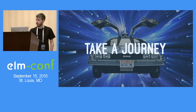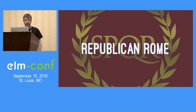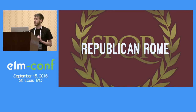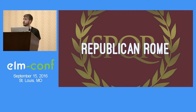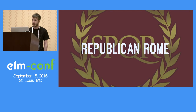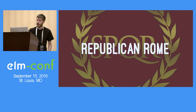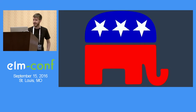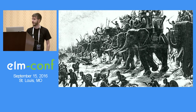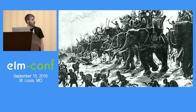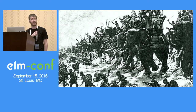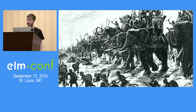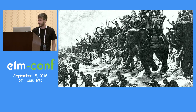We're going to be journeying to Republican Rome — the period before the Roman emperors started, approximately 2000 to 2500 years ago. These elephants are part of Hannibal's army facing down a Roman army commanded by Publius Scipio Africanus. We'll hear a little bit more about him later.